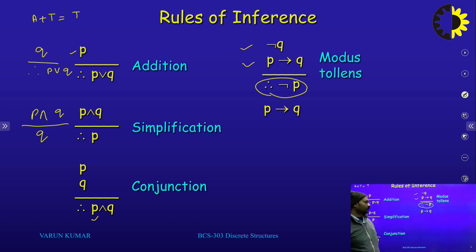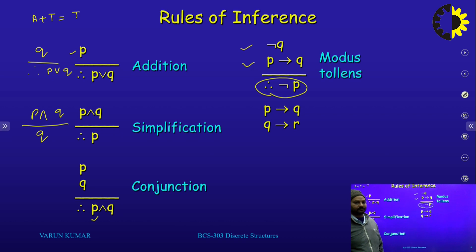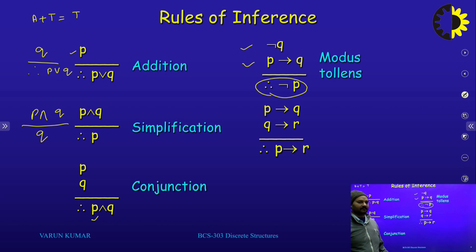One more law: if p implication q is true, and q implication r is also true — p implication q, q implication r — then my conclusion is p implication r. This is the transitivity property.